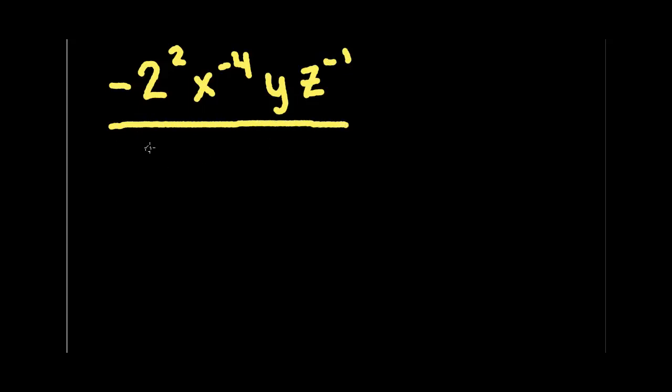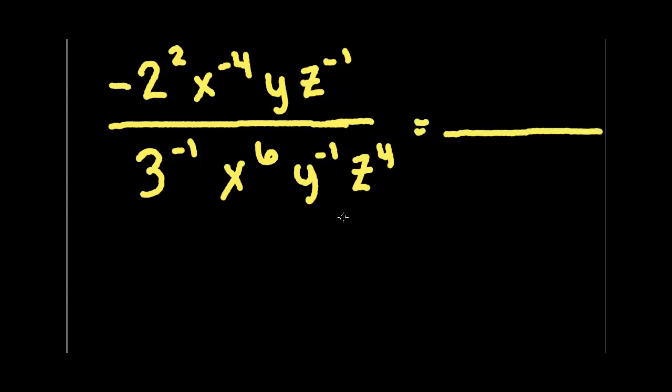Let's do negative 2 squared x to the negative 4, y, z to the negative 1 over 3 to the negative 1, x to the 6th, y to the negative 1, z to the 4th. Alright, if you want to, feel free to pause the video and try it on your own. But we'll go ahead and do this together.